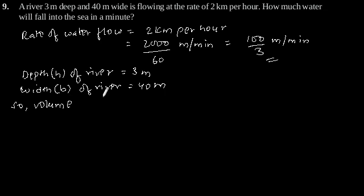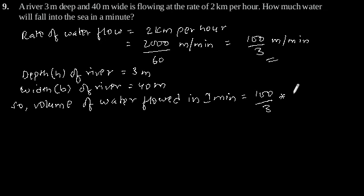So volume of water flowed in 1 minute is equal to 100 divided by 3 into 40 into 3, which is equal to 4000 cubic meter.